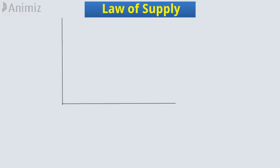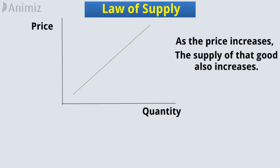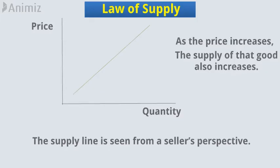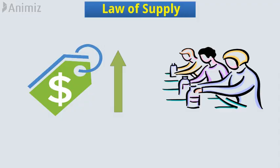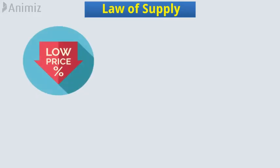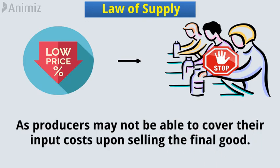Law of Supply. Generally, the supply of a good and its price are directly proportional to each other and follow a linear relationship. As the price increases, the supply of that good also increases. The supply line is seen from a seller's perspective. When prices of a product increase, producers are willing to manufacture more of the product to realize greater profits. Likewise, falling prices depress production, as producers may not be able to cover their input costs upon selling the final good. Thus, we get a linear relationship.